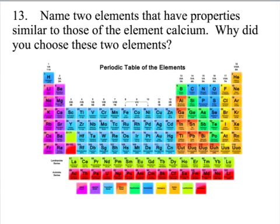If you were to choose two elements that have properties similar to calcium, you could choose beryllium, magnesium, strontium, barium, or radium. The reason why they're chemically similar is they are in the same group. They're all alkaline earth metals. They have the exact same valence electron configuration. Elements that have the same valence electrons tend to be very similar as far as their reactivity, what elements they react with, and what ratio.